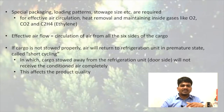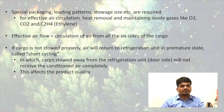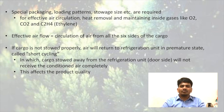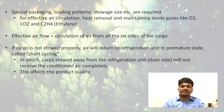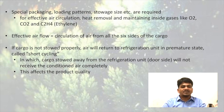Special packaging, loading patterns, and storage size are required for effective air circulation, heat removal, and maintaining inside gases like O2, CO2, and ethylene. Effective airflow may be calculated by considering the circulation of air from all six sides of the cargo. If cargo is not stored properly, air will return to the refrigeration unit in a premature state called short cycling, where cargo stored away from the refrigeration unit near the door side will not receive the conditioned air completely.